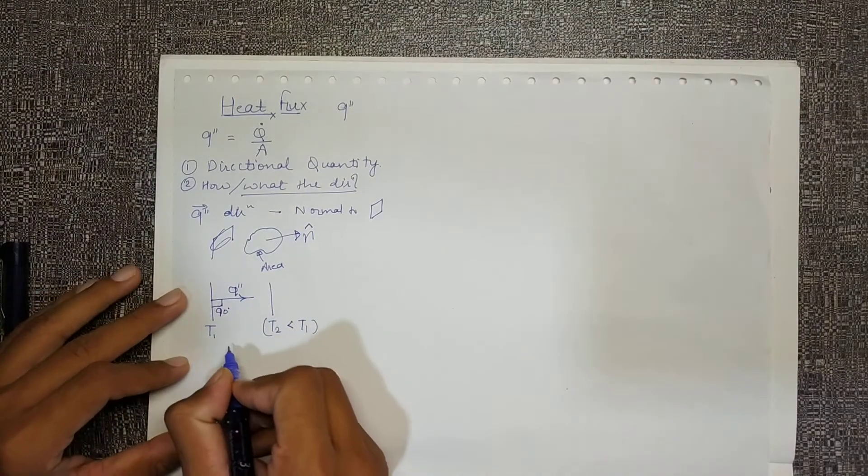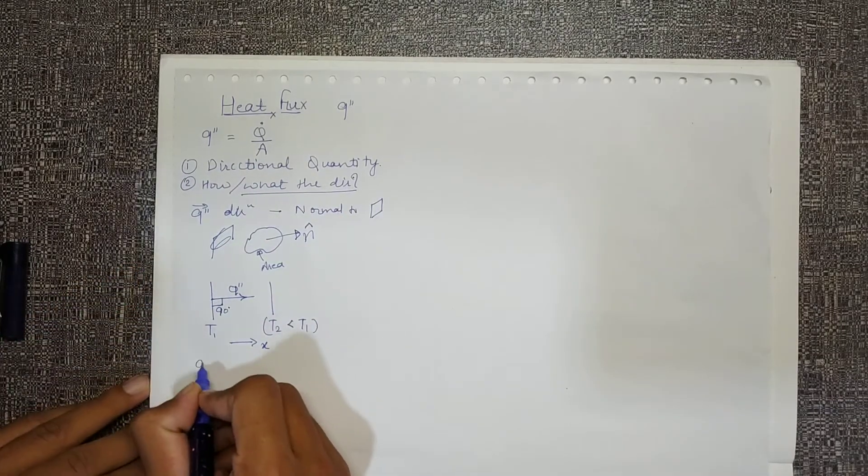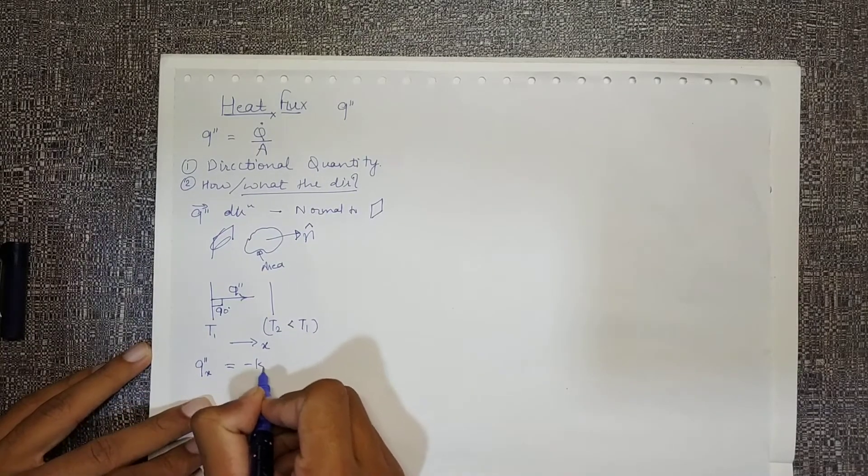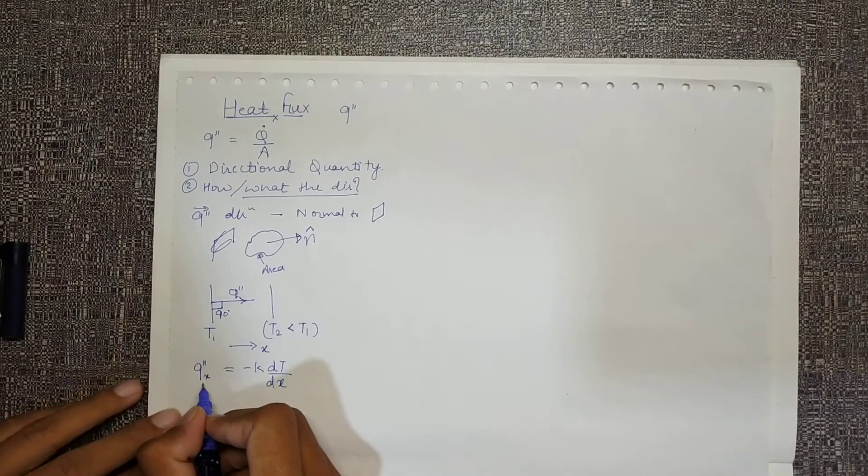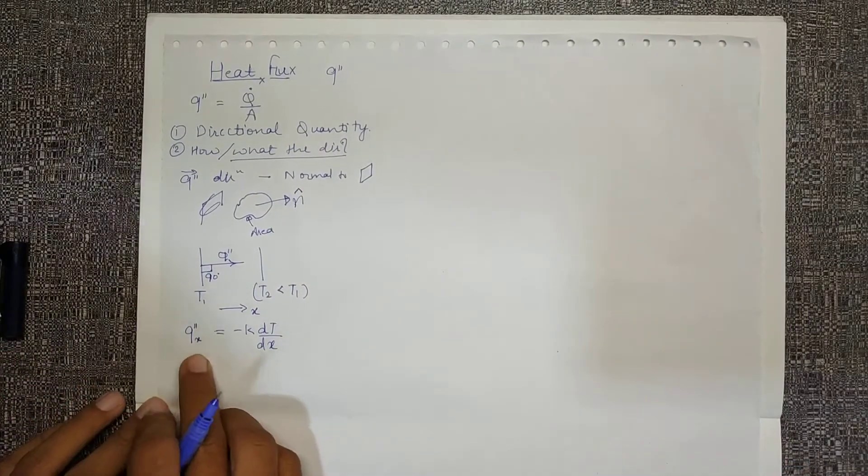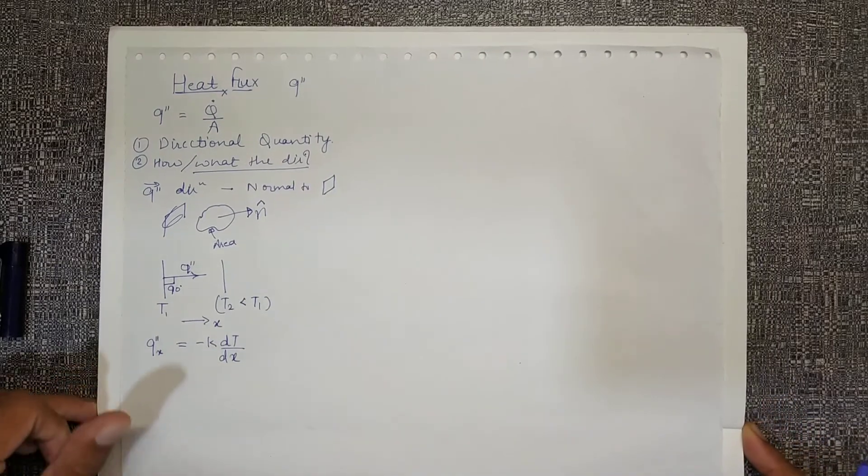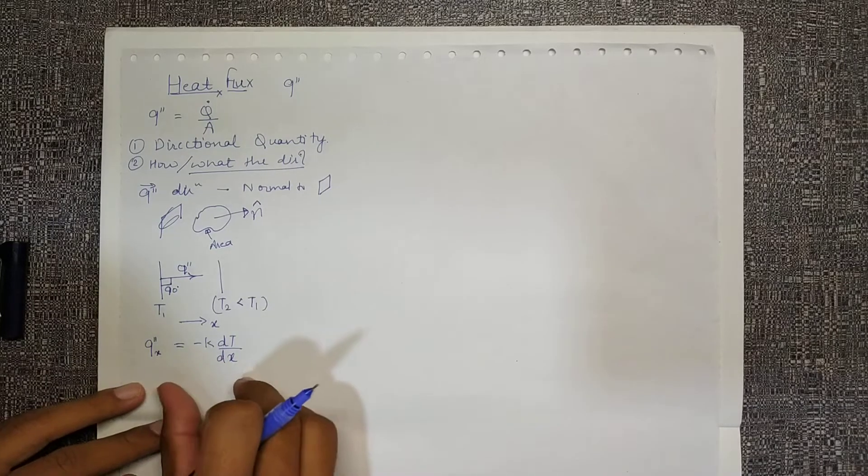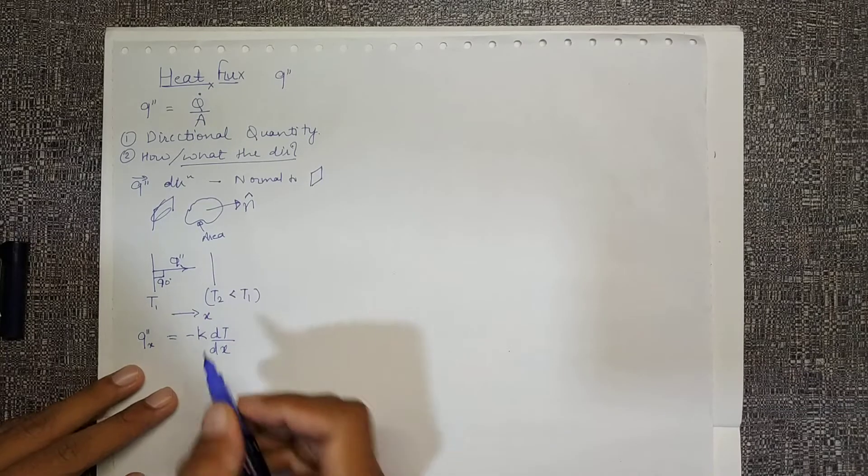As I used earlier, if this is the x direction, then q double dash x will be defined as minus k dt by dx. This subscript x represents that I am writing the heat flux in that direction. This is a generalized one, this is a specific one for one direction.